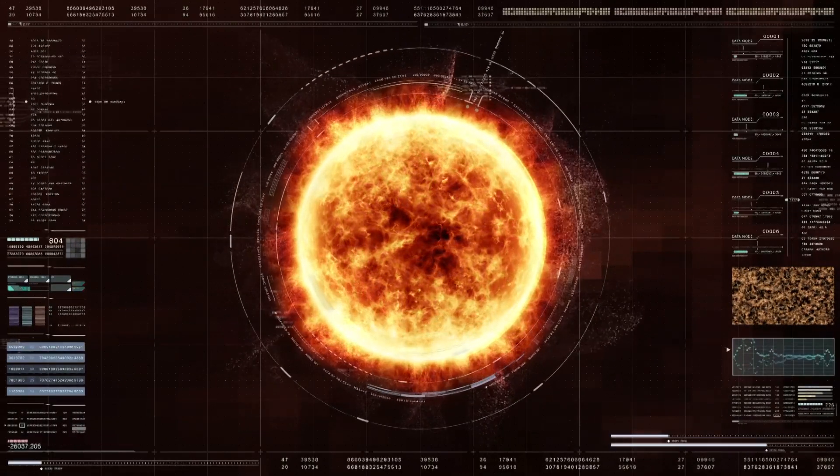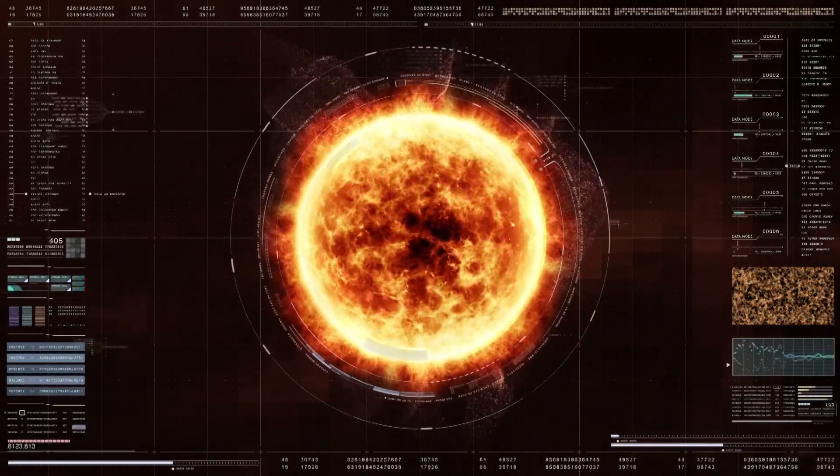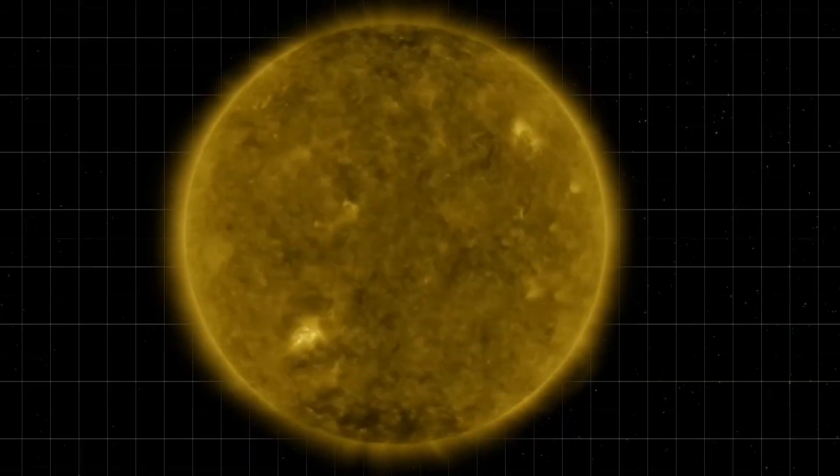Over the course of roughly 11 years, these magnetic fields gradually weaken, realign, and eventually flip. This is known as the solar cycle.